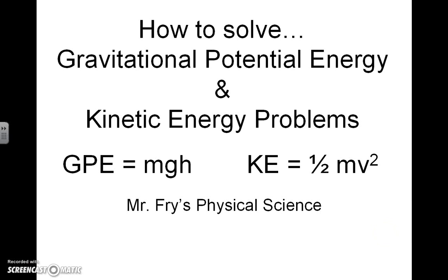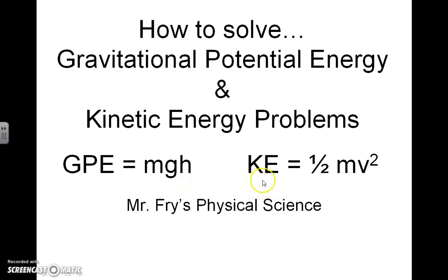Hello folks, this is Mr. Frey with a video about how to solve gravitational potential energy and kinetic energy problems. On screen you'll notice that I have the formulas for each of these things here. The gravitational potential energy formula is mass times the acceleration due to gravity times the object's height above the ground. The kinetic energy is equal to one-half the object's mass times the velocity squared.